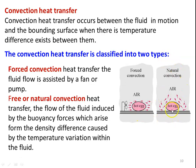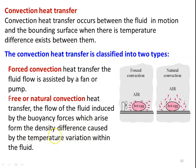In natural convection, there is no fan but there is air flow. Consider a hot egg — the air adjacent to the surface of the hot egg is heated, its density decreases, and the low-density air moves upward while cold air rushes in to replace it. So air current occurs because of density difference, which is caused by the temperature difference. In forced convection, fluid flow is assisted by a fan or pump. In free or natural convection, the flow of fluid is induced by buoyancy forces which arise from the density difference caused by temperature variation within the fluid.